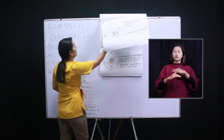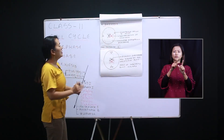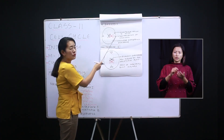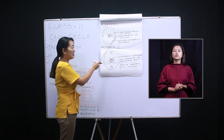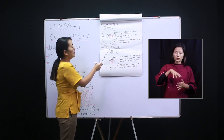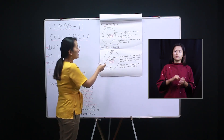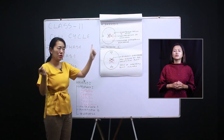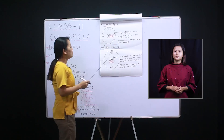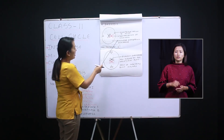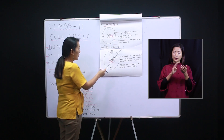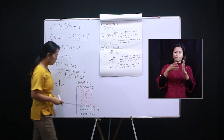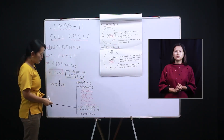The next stage is diakinesis. In diakinesis, the centrioles move to the poles. There is also terminalization of chiasmata — the X portions holding the chromatids together tear away. As a result, the nuclear membrane completely disappears, which leads to the next phase: metaphase one.